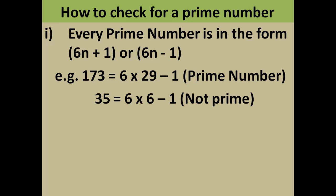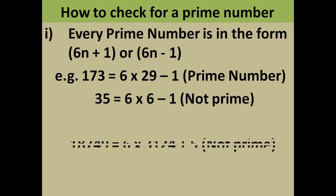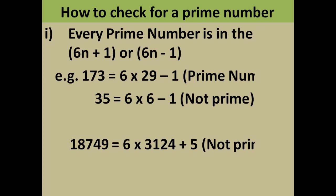Let's take another example: 18749. Now 18749 divided by 6 gives 5 as the remainder, so it is equal to 6 into 3124 plus 5. You can be very sure that 18749 is not a prime number. You have to use this method in a reverse way.